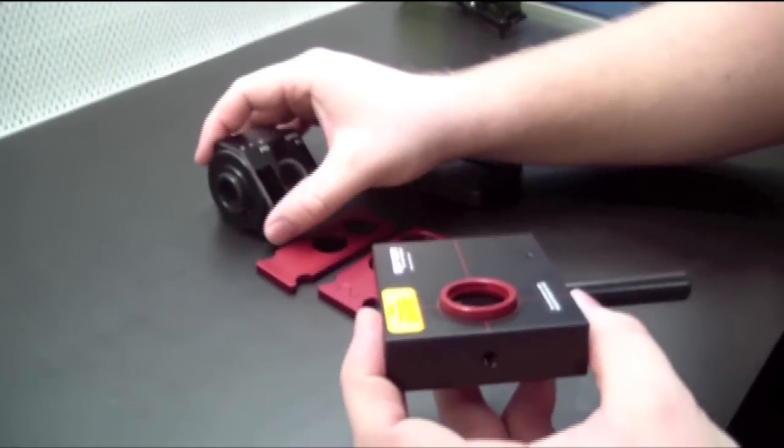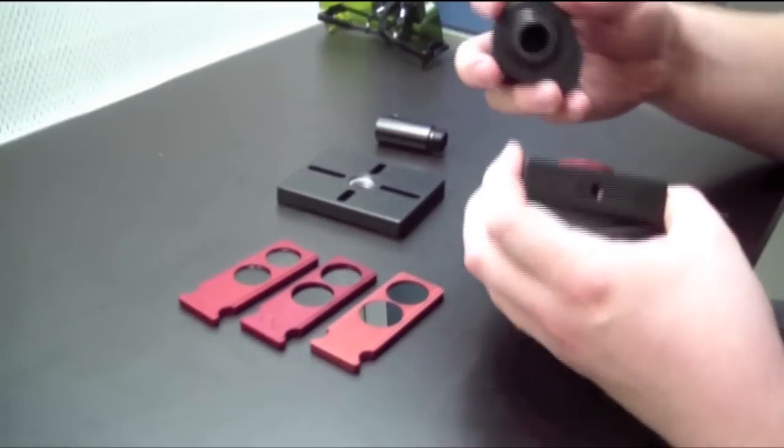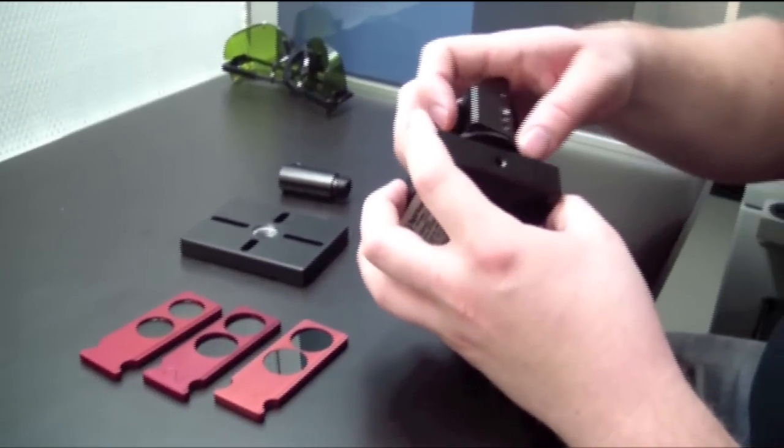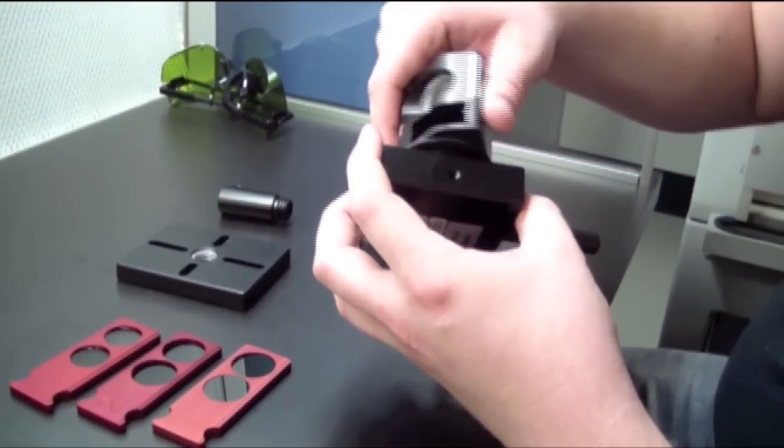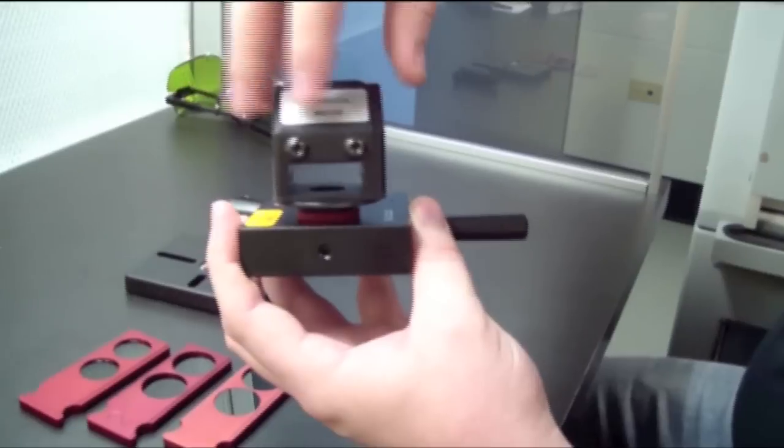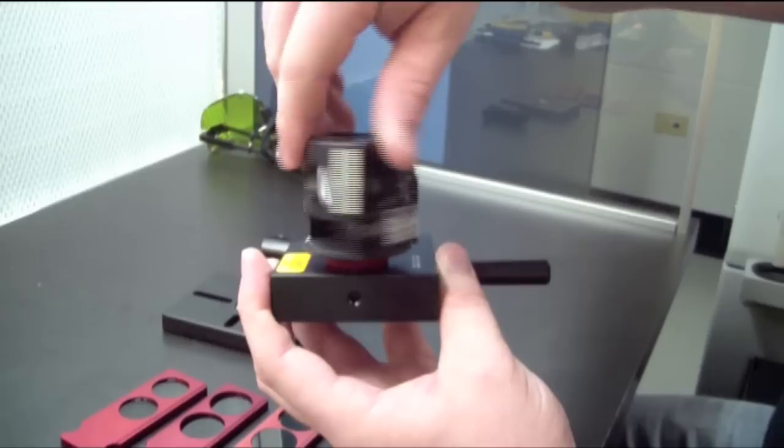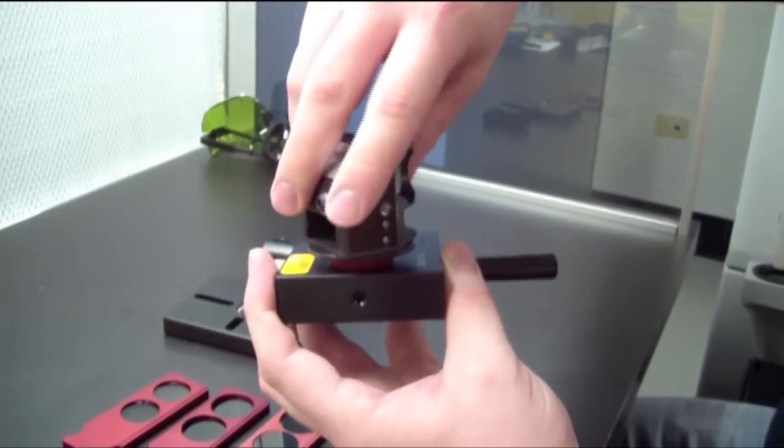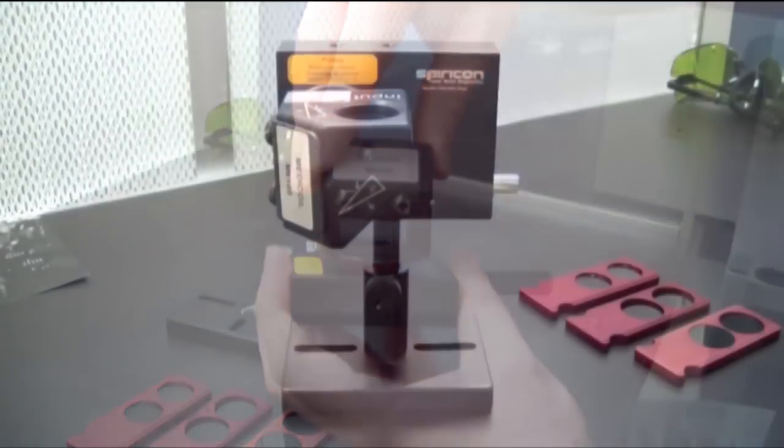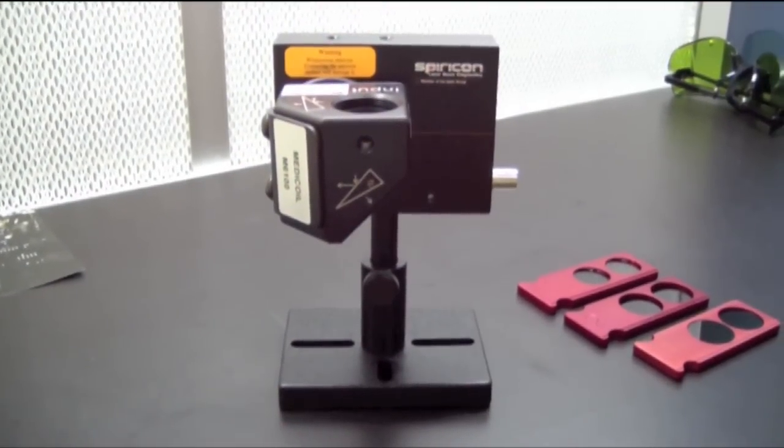Next, we will install the post onto the tapped quarter-twenty hole on the bottom of the camera. At this point, we will install the LBS-300 onto the front of the camera by screwing it into the C-mount threads at the aperture of the camera. When you have rotated the LBS-300 as much as you can go, back it off until the input aperture of the LBS-300 is perpendicular to the input beam.